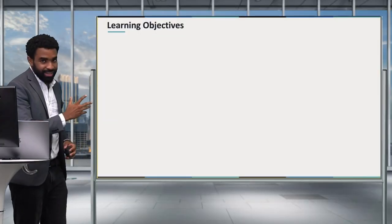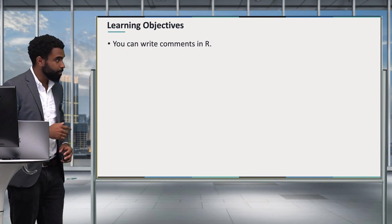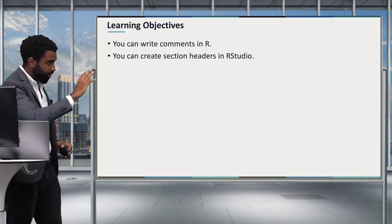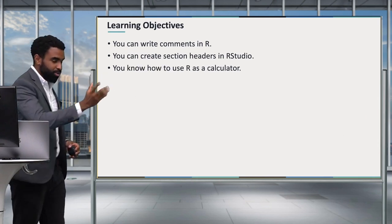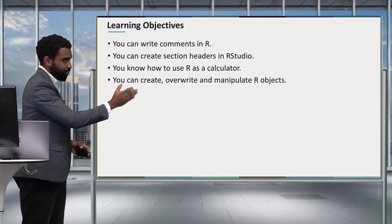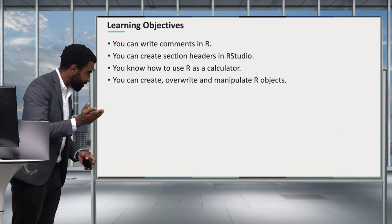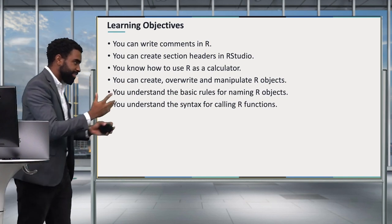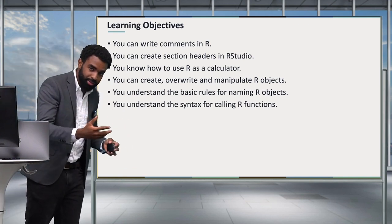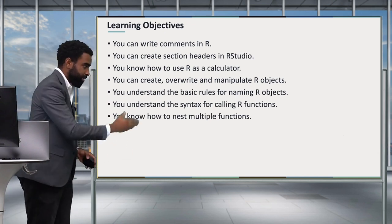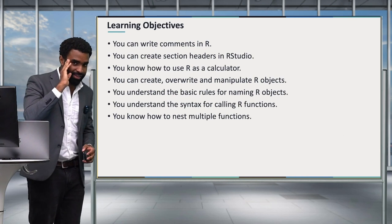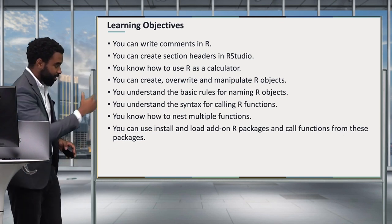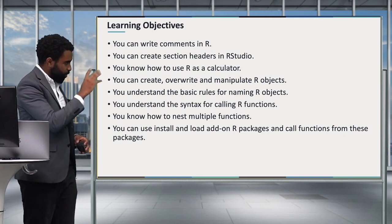Here are the objectives we had set out at the beginning of the lesson. You should now be able to write comments in R, create section headers in RStudio, use R as a calculator, create and overwrite and manipulate R objects, understand the basic rules for naming R objects, understand the syntax for calling R functions and using their arguments, nest multiple functions, assign intermediate objects, and install and load add-on R packages and call functions from those packages.